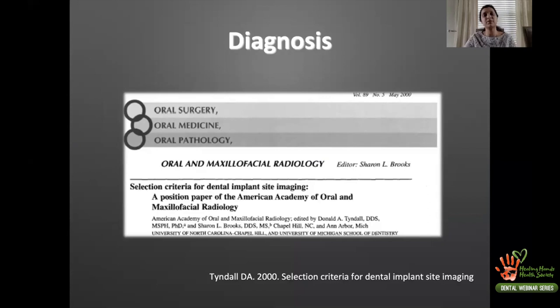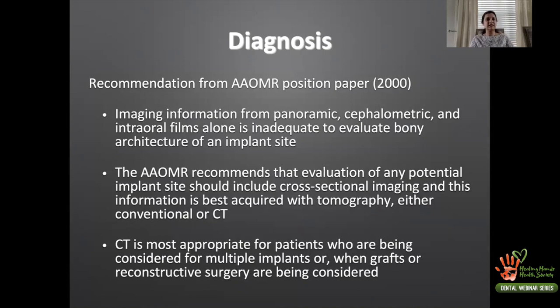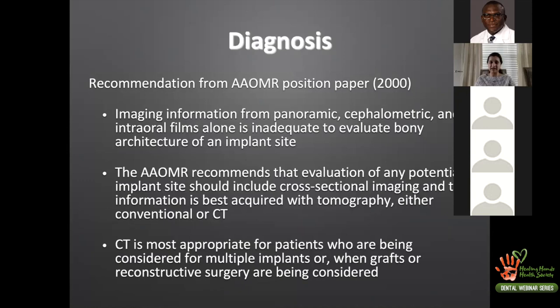This AAOMR position paper from 2000 by Tyndall et al. recommends that imaging information from panoramic, cephalometric, and intraoral films alone is inadequate to evaluate the bony architecture of an implant site. The AAOMR recommends that evaluation of any potential implant site should include cross-sectional imaging, best acquired with tomography — conventional or CT. CT is most appropriate when multiple implants are being considered or when grafts or reconstructive surgeries are planned.